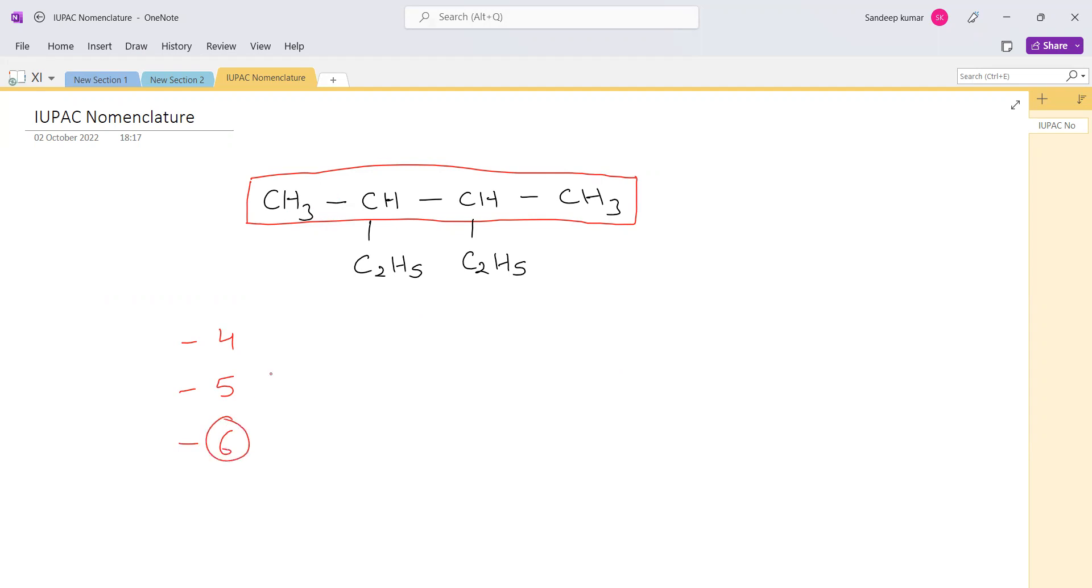6, neither 4 nor 5, it's 6. So now can you easily visualize the chain having 6 carbon atoms? Actually, the chain is lying over here, so it could be from this